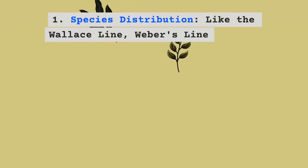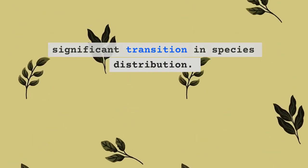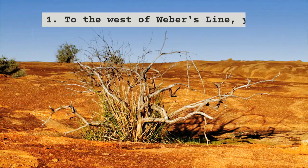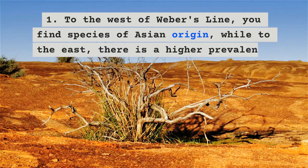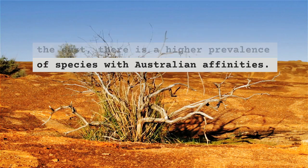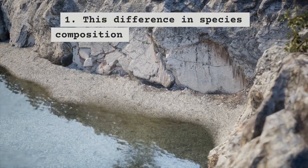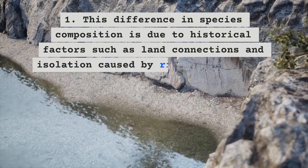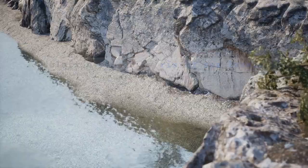Like the Wallace Line, Weber's Line marks a significant transition in species distribution. To the west of Weber's Line, you find species of Asian origin, while to the east there is a higher prevalence of species with Australian affinities. This difference in species composition is due to historical factors such as land connections and isolation caused by rising sea levels.